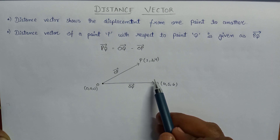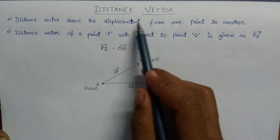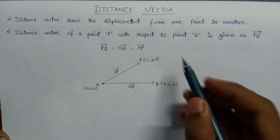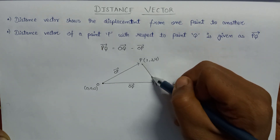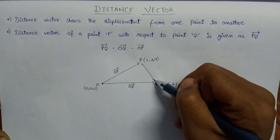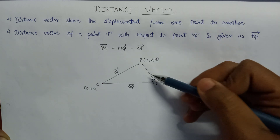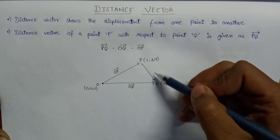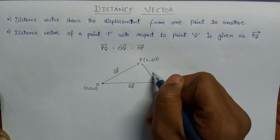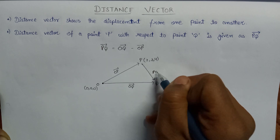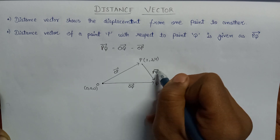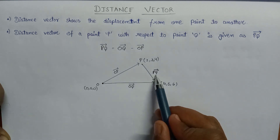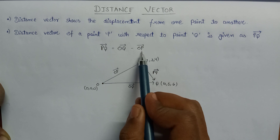Since we use the distance vector for showing the displacement from one point to another point, here is the distance vector which is showing the displacement between point P and point Q. This displacement vector is shown as PQ vector, and PQ vector equals OQ vector minus OP vector.